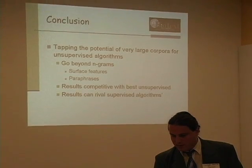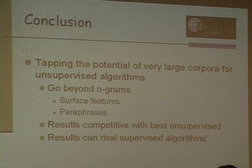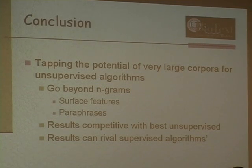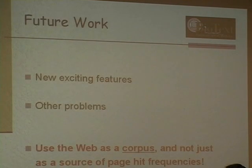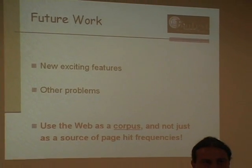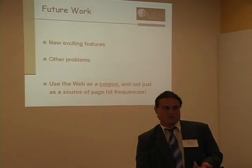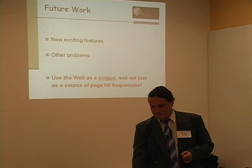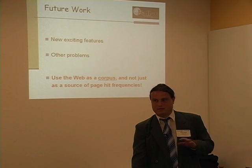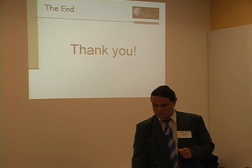To wrap up: I've proposed using additional sources from the web — not just as a source of n-grams, but really as a corpus — using different surface markers and paraphrases to get better results. For noun compound bracketing, I achieved results statistically significantly better than the best published algorithms. There are probably more exciting features to exploit on the web, and other problems where such features apply. People are already using some of my proposed features for query segmentation. What I'm really advocating is using the web as a corpus, getting into the text and extracting words, prepositions, and other linguistic patterns.